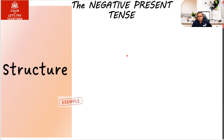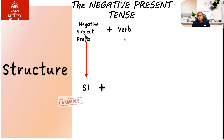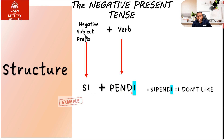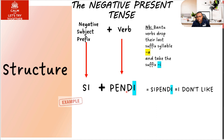Now the structure — how do we put it all together? We start with our subject prefix and then it is followed by the verb. When you're negating now — I am not going, he or she is not eating — you just add your subject prefix plus the verb straight away. For example, the verb 'penda' (love or like). Because it is a Bantu verb, it ends with the suffix R. We are going to replace that R with an E.